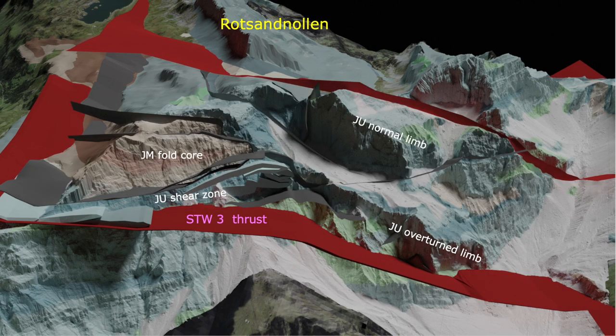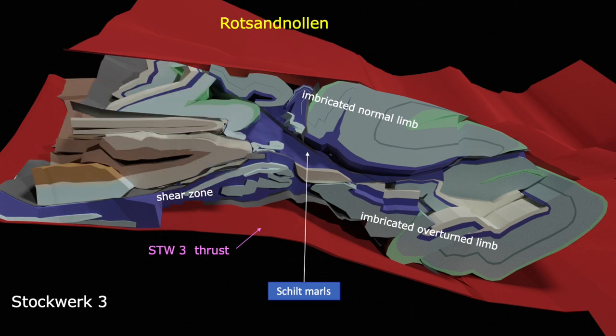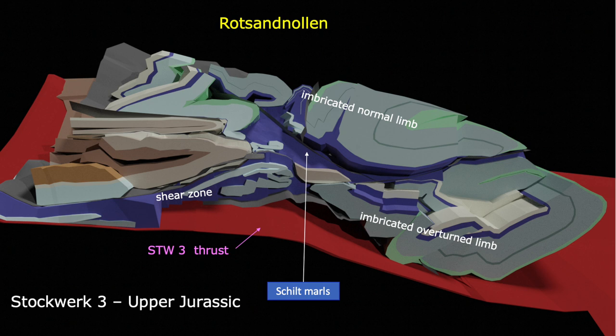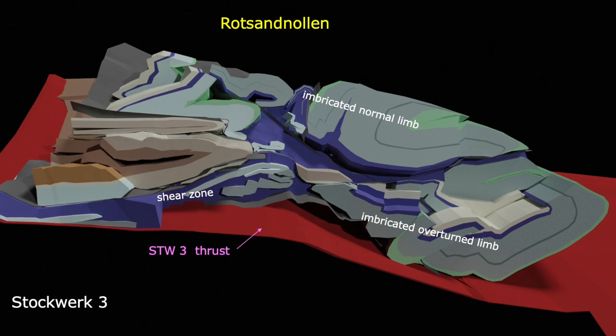This suggests that Thrust Sheet III detached from its substratum in Lower Jurassic marl and shale beds. Interestingly, the Upper Jurassic broken-up large recumbent fold is dislocated from the core. Clear disharmonic deformation of the competent Upper Jurassic and Middle Jurassic thick limestone appears to have occurred through differential movement across the unusually thick Erzeg shale marls found in this area.